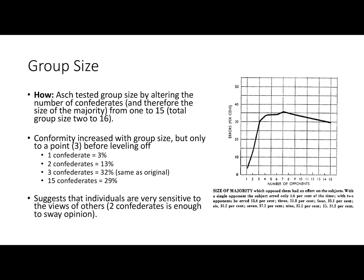Let's start by looking at the impact of the group size variable. Asch tested this by altering the number of confederates. In his baseline study there were around five to seven confederates — actors working on behalf of the investigator who deliberately gave the wrong answers — while the real participant's conformity rate was measured. Asch investigated group size by varying the number of confederates and therefore the size of the majority.